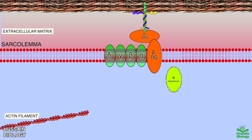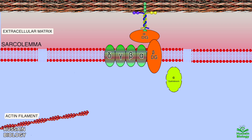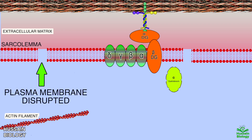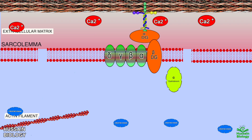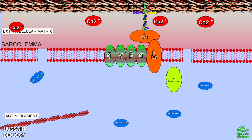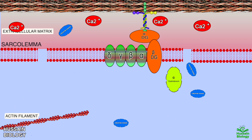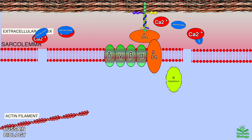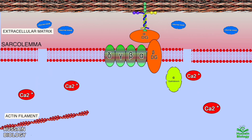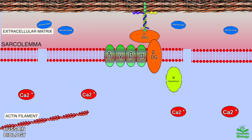The absence of dystrophin protein destabilizes the motor movements of the cell, which in turn creates openings in the sarcolemma, as shown in the diagram. Upon this, creatine kinase from the muscle cell leaks out and there is an influx of calcium ions into the cell.